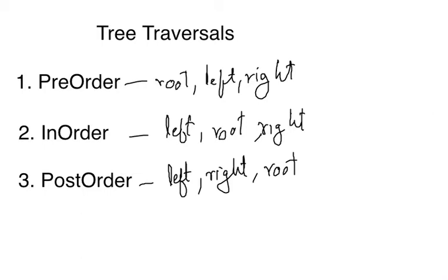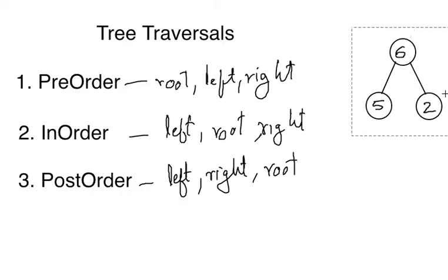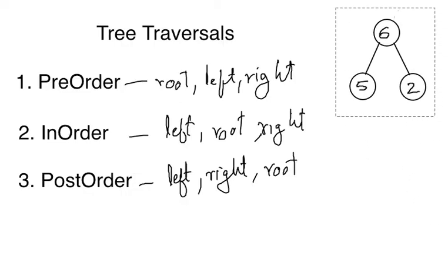So let us take a small tree and see the example, how it is done. Suppose there is a small tree. Now preorder for this one is, preorder means first take root, then go to left child, then go to right child.